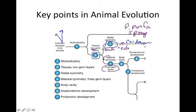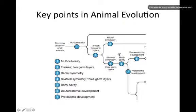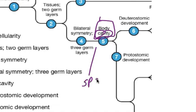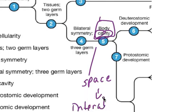Now we look at another group that has true germ layers as well as bilateral symmetry, and we look at the concept of the body cavity. The body cavity is able to house internal organs — it creates a space or compartment that allows internal organs to be housed. You saw this distinctly with the earthworm: as you cut through the epidermis, you saw the reproductive organs, the crop, the gizzard, and the long intestinal tract.